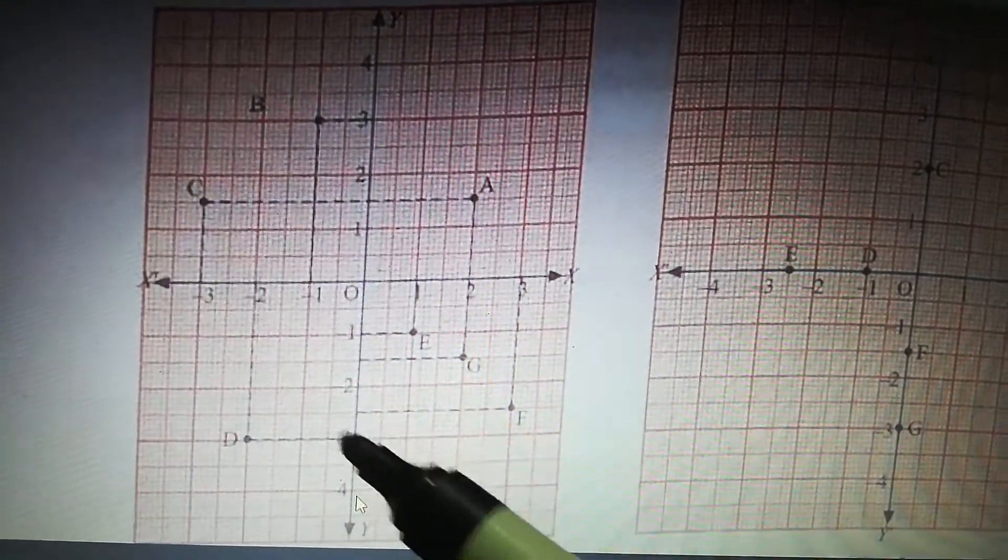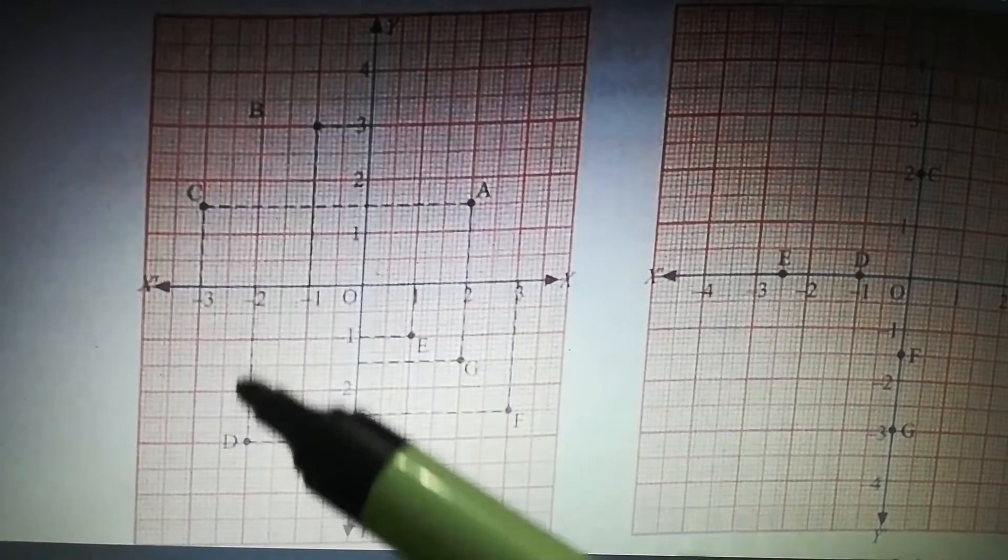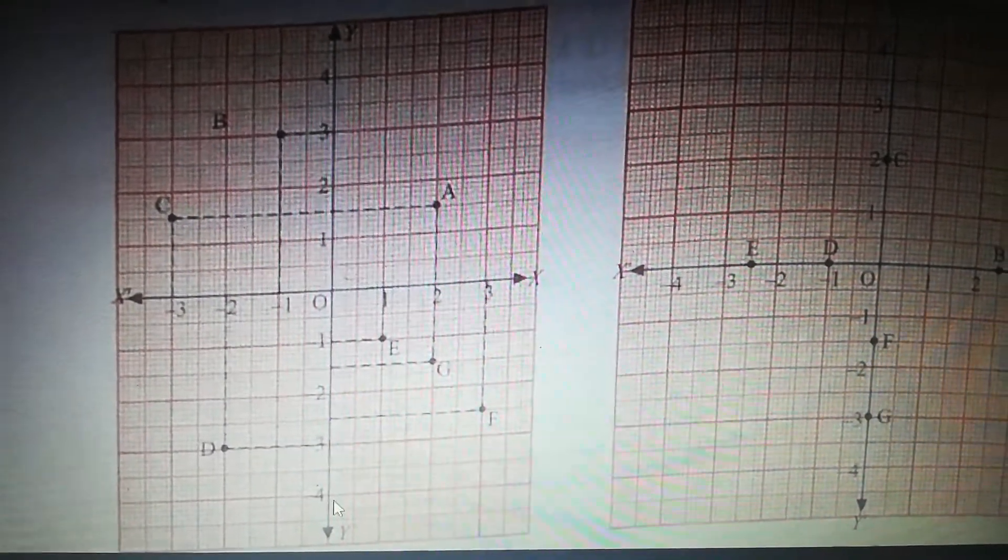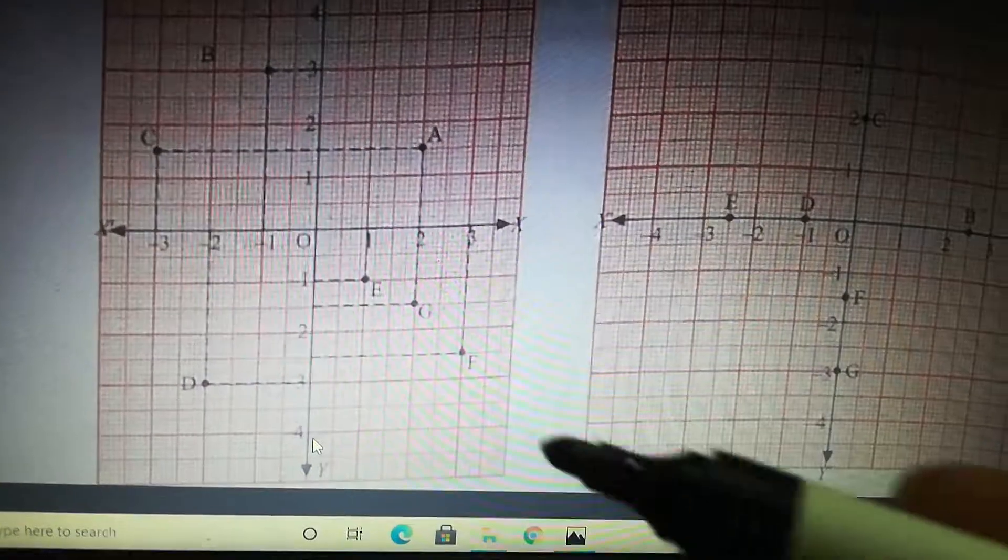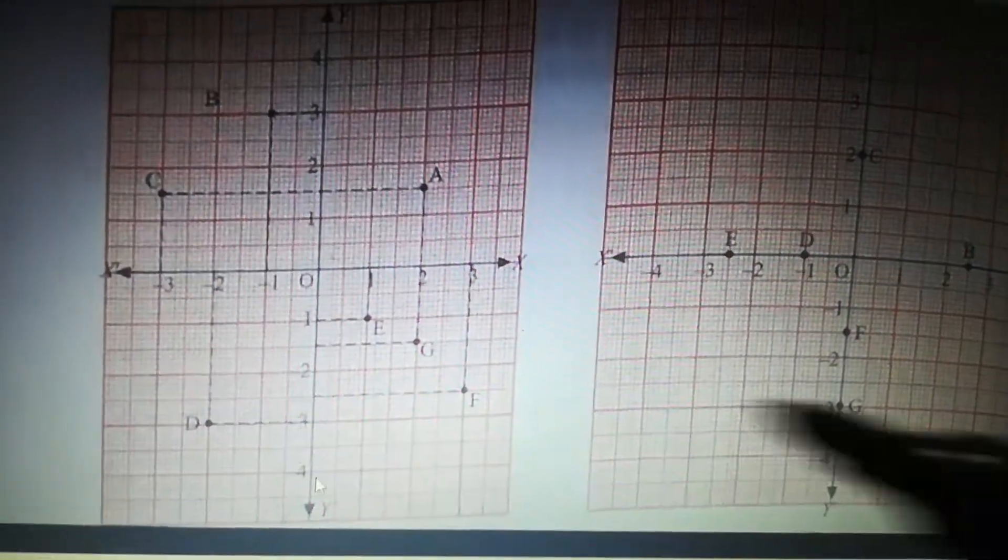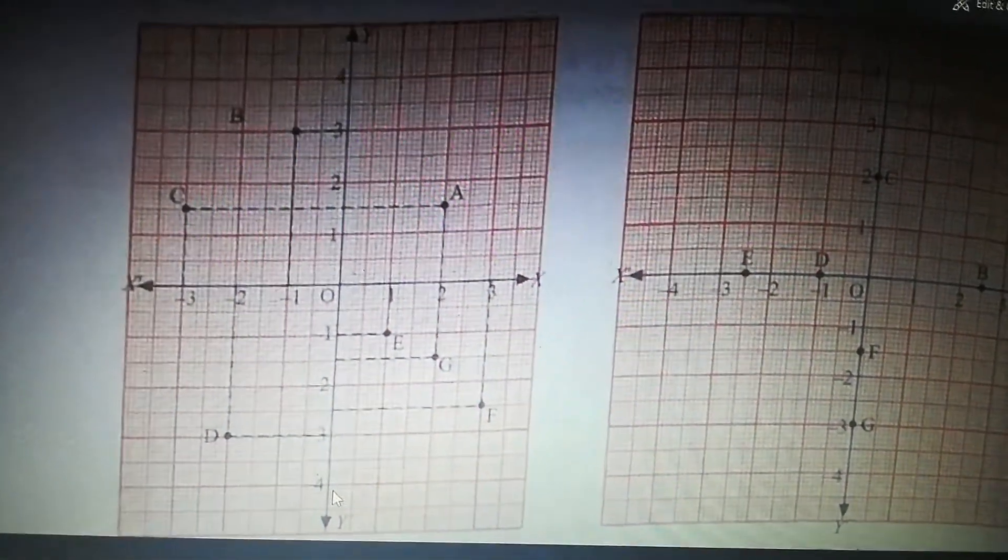Next point D. D you can see downside. The point is X is minus 2 and Y is minus 3. Always X is first, minus 2 and minus 3. So X is minus 2 and Y is minus 3.